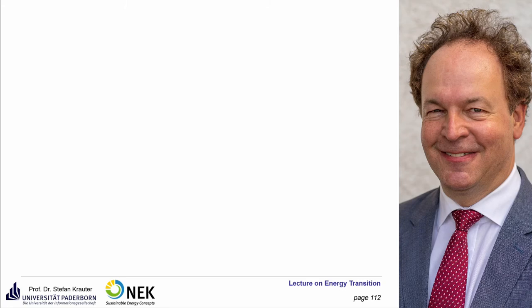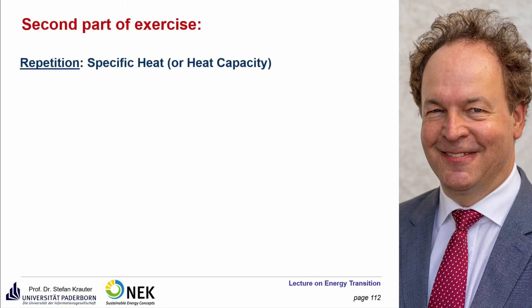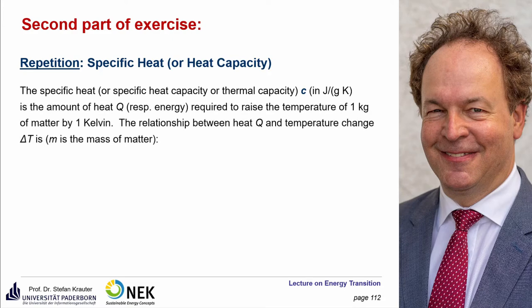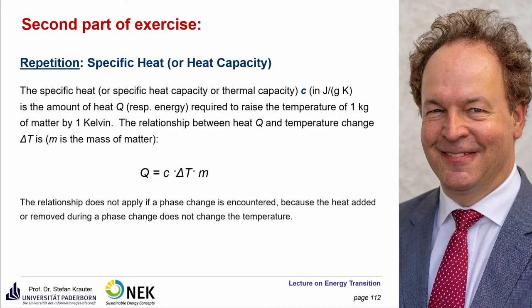So we come to the second part of the exercise. First, let's do a repetition because we need it. The specific heat, sometimes called heat capacity or thermal capacity, is denoted by small letter C with the unit joule per gram Kelvin. It is the amount of heat energy required to raise the temperature of one kilogram of matter by one Kelvin. The relationship between heat Q and temperature change delta T is: Q equals C times delta T times M, the mass of the matter you want to heat. This relationship does not apply if a phase change is encountered.